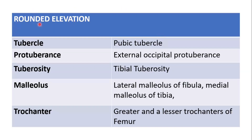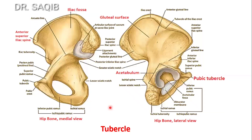Now the rounded elevations. First of all is the tubercle — the pubic tubercle. You could see this is the pubic tubercle on the labeled diagram.